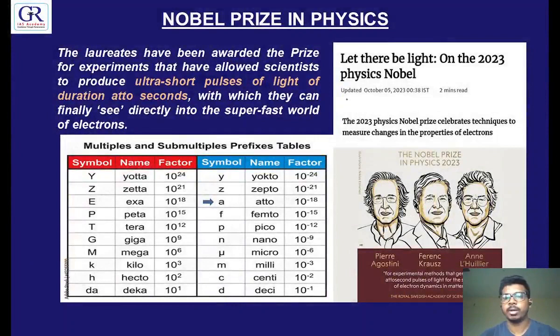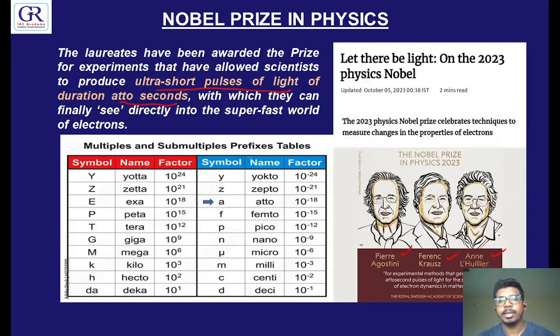Ultra short pulses of light of duration of attoseconds — we will see what attoseconds are. The Nobel Prize in physics was given to three personalities: Dr. Augustini, Dr. Charles, and Dr. Hulia. These three persons got the Nobel Prize in physics in 2023 for their experimental method that generates attosecond pulses of light for the study of electron dynamics in matter.